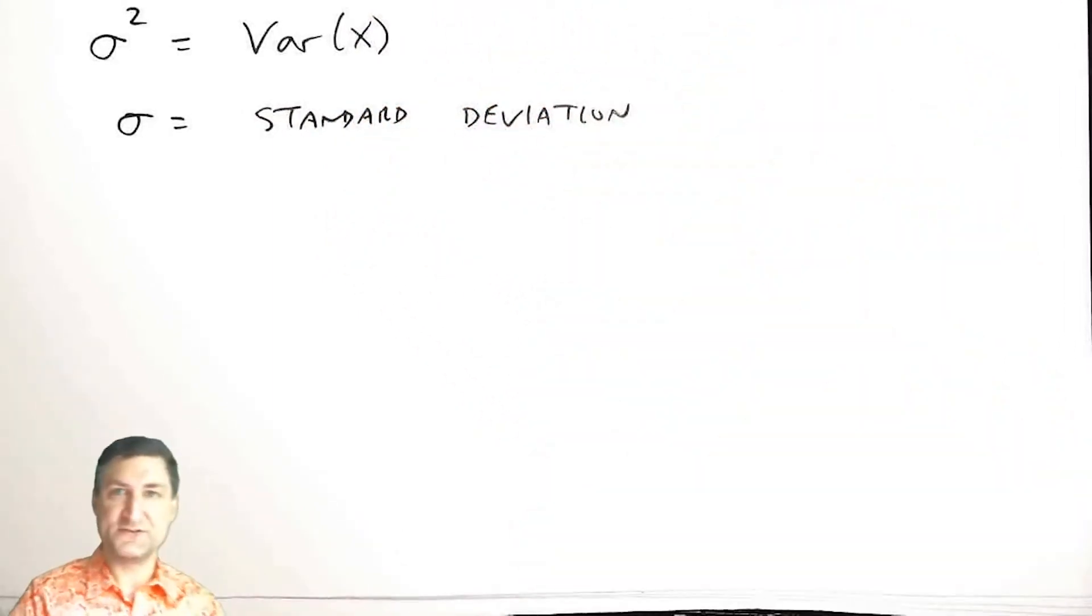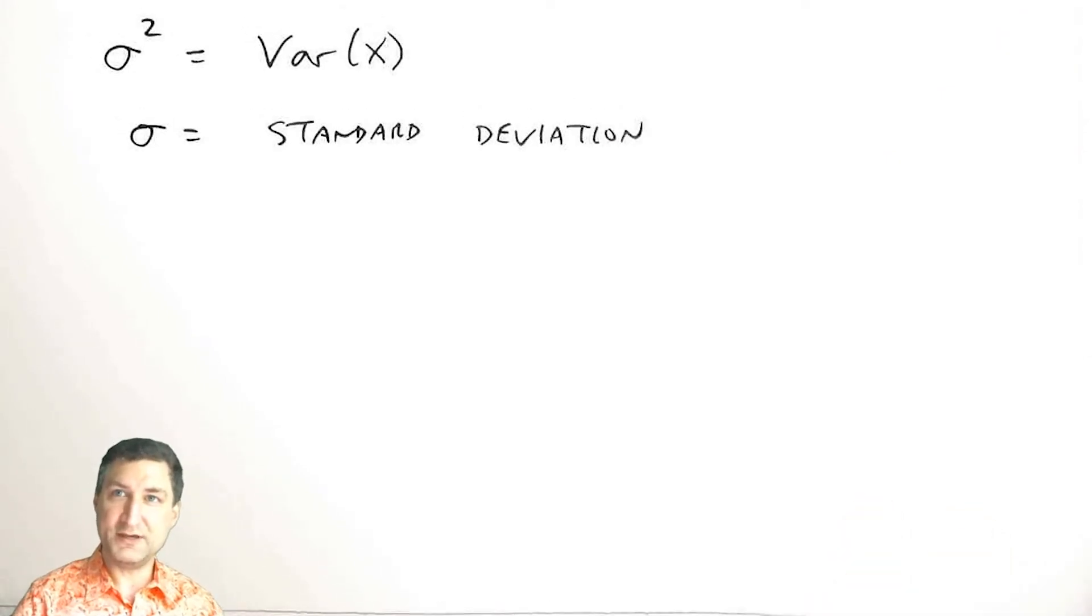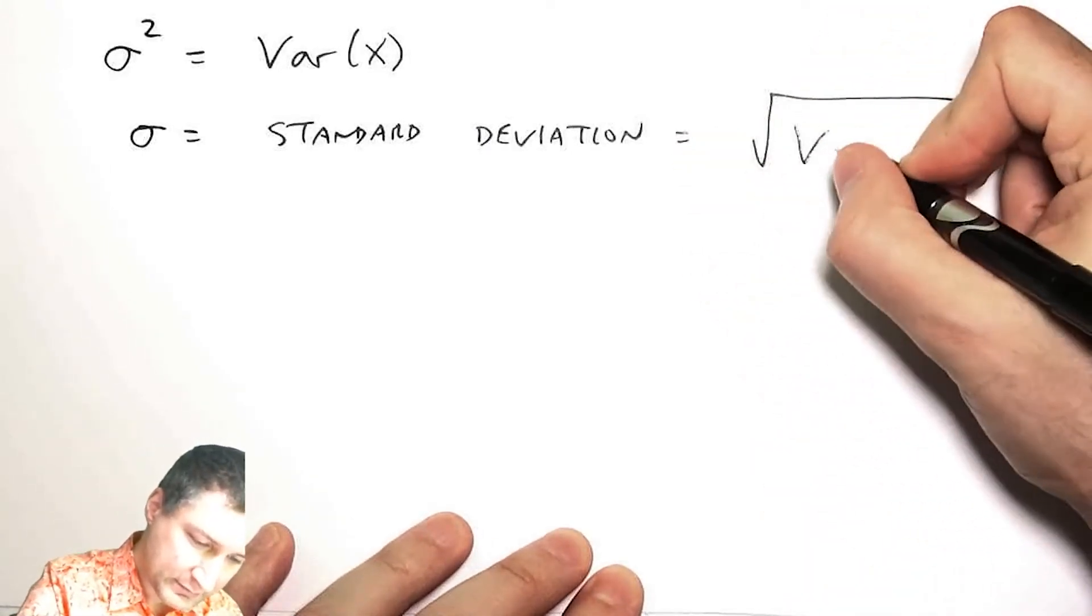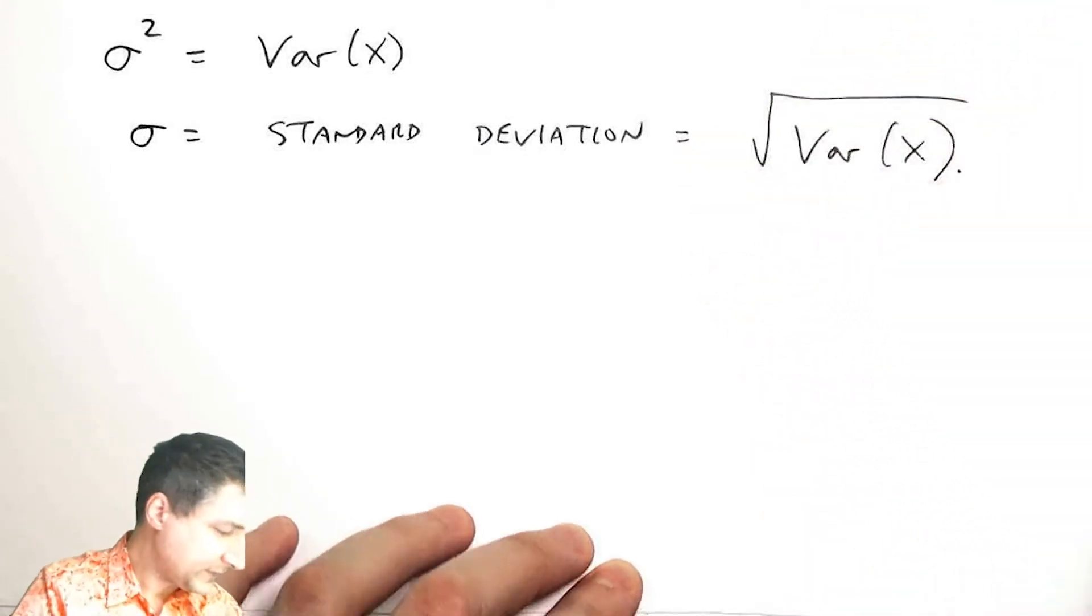If you've ever done statistics, you've computed probably the mean and the standard deviation of a bunch of numbers. In the same way we can compute the mean and the standard deviation of a random variable.